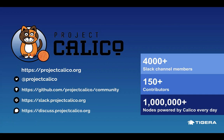Project Calico is by far the most widely deployed CNI across Kubernetes. Datadog produced a report recently showing Calico is ubiquitous in this space. We power well over 150,000 to 200,000 known clusters, and well over a million nodes are powered by Calico every day. It's very widely used, battle-hardened and tested — something that a lot of different organizations rely on for their Kubernetes workloads.